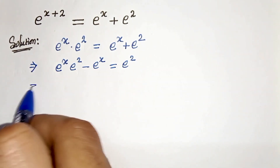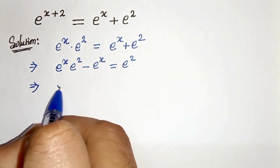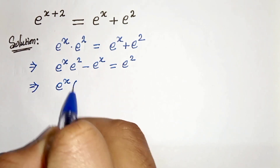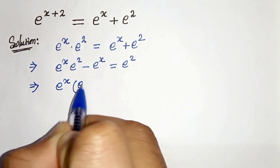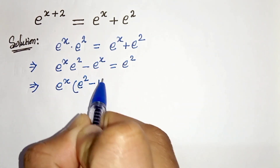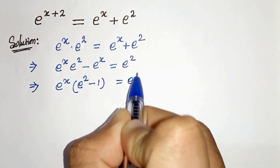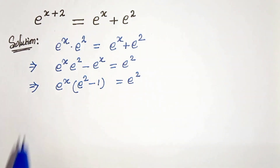Now let's take e to the power x common. So here it will be e to the power x times e to the power 2 minus 1, equals e to the power 2.